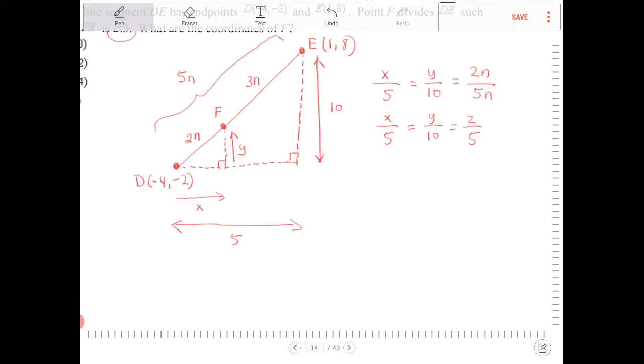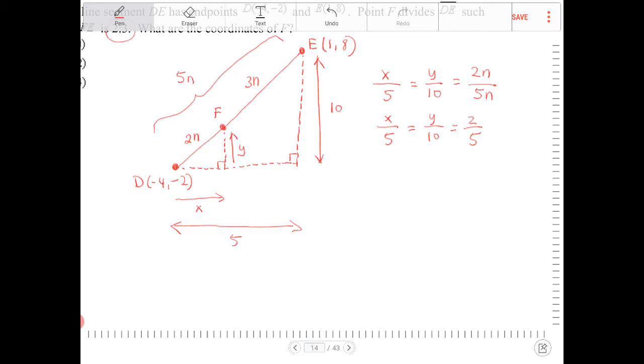So now, in order for me to solve for how much I'm going to move in the horizontal direction to go from D to F, I am going to take this proportion and solve for the unknown one at a time. I'm going to say X over 5 is equal to 2 over 5. The only way that this would work is if X is equal to 2. So I multiply 2 fifths by 5, so X is equal to 2.